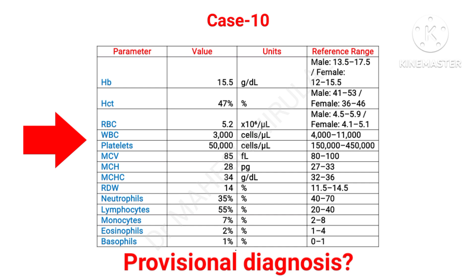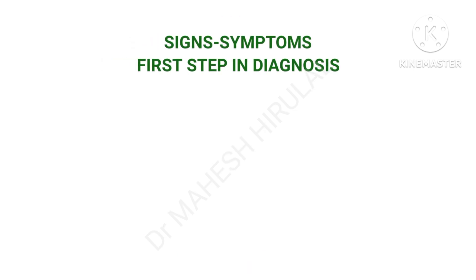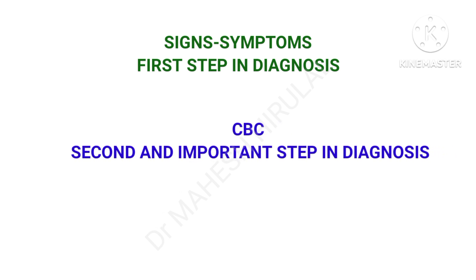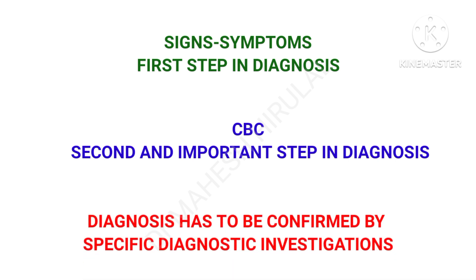You can comment in the comment box and get the answers from the video description. These are imaginary typical case scenarios and lab reports. In real life, a patient may present with different signs and symptoms and there may be many variations in lab reports. Assessment of signs and symptoms is the first step in any diagnosis. CBC is the second and most important step in the diagnosis of most disorders. Diagnosis has to be confirmed by specific diagnostic investigations.